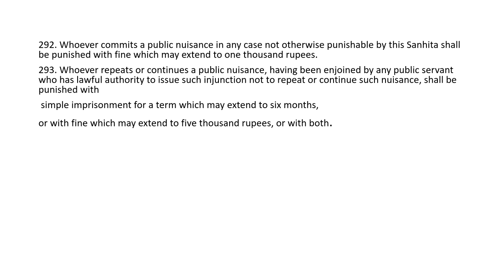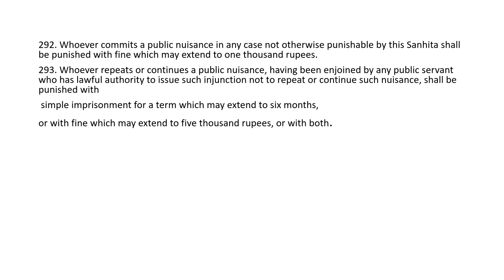Section 292 provides that whoever commits a public nuisance in any case not otherwise punishable by this Sanhita shall be punished with fine which may extend to one thousand rupees. Section 293 provides that whoever repeats or continues a public nuisance having been enjoined by any public servant who has lawful authority to issue such injunction not to repeat or continue such nuisance — for example, continuing construction activity creating pollution despite a restraint order from authorities — shall be punished, with the possibility of both imprisonment and fine.